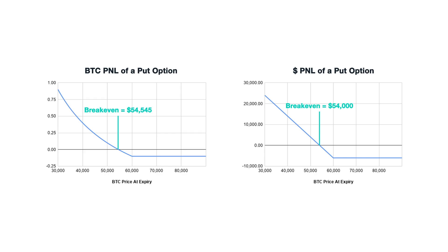This difference is even more important to be aware of with cryptocurrency put options, because when selling a cryptocurrency put option, the maximum loss when measured in the cryptocurrency itself is unlimited. This is a significant difference to the dollar put options discussed in the previous section, which had a maximum loss capped by the strike price minus the premium.